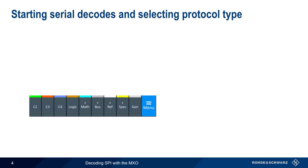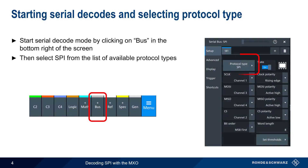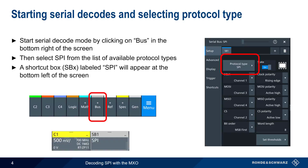The first step in decoding SPI data with the MXO is to select BUS from the list of items in the bottom right corner of the screen. Then select SPI from the list of available protocol types. This will also create a small box labeled SPI in the signal bar near the bottom left corner of the screen. This box can be used as a shortcut for configuring SPI parameters.